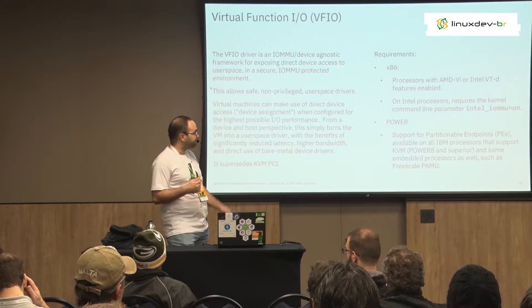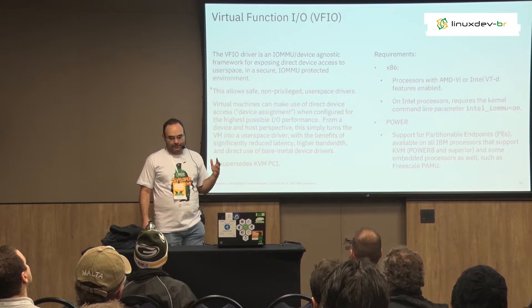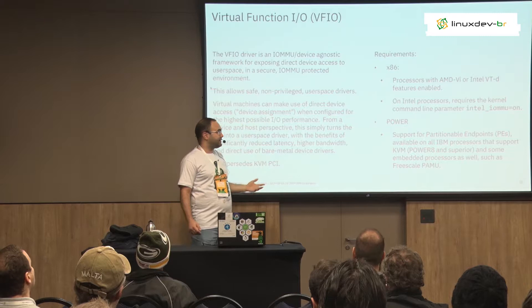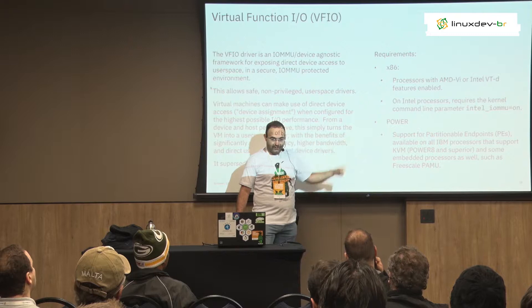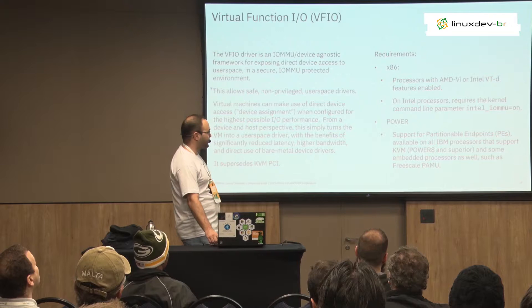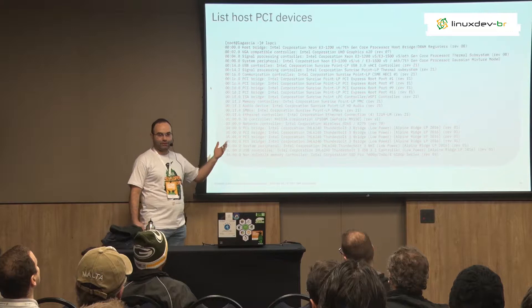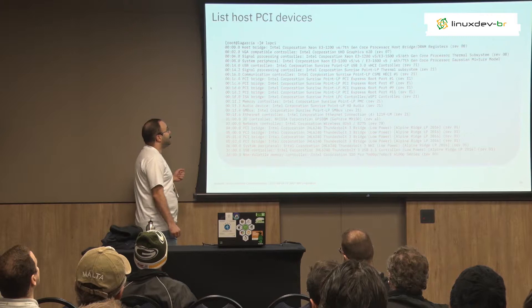This is available on many platforms, though VFIO is not platform-independent — you depend on some processor features. Specifically, you need IOMMU support. On x86, this is available but you have to enable it via the kernel command line parameter `intel_iommu=1`. On Power machines, this is available by default since at least Power 8, so you don't need to do anything extra. So, how do you pass through a device to a guest?